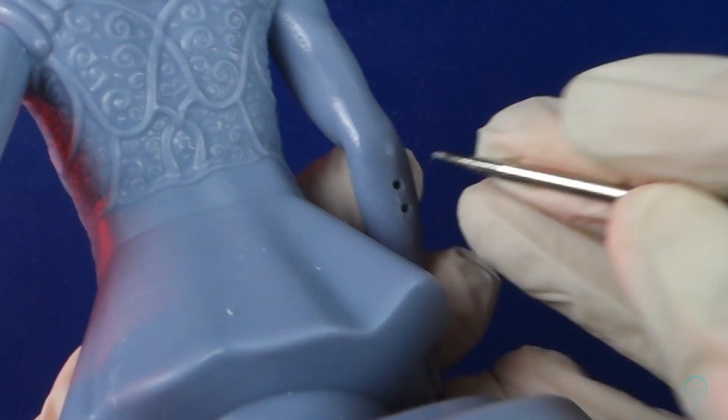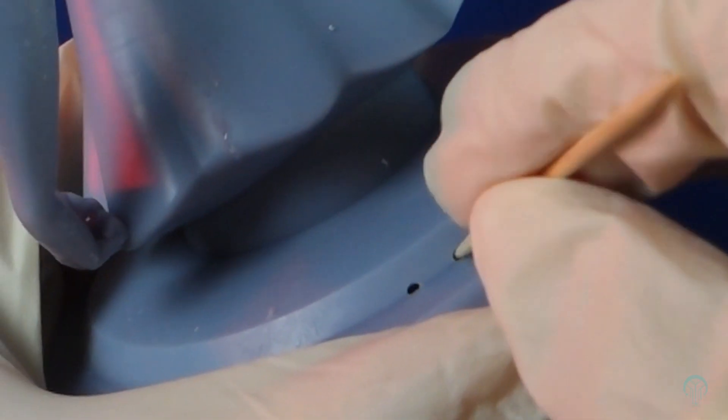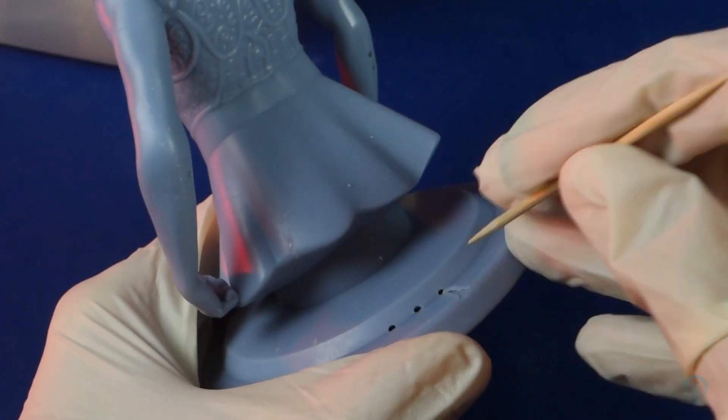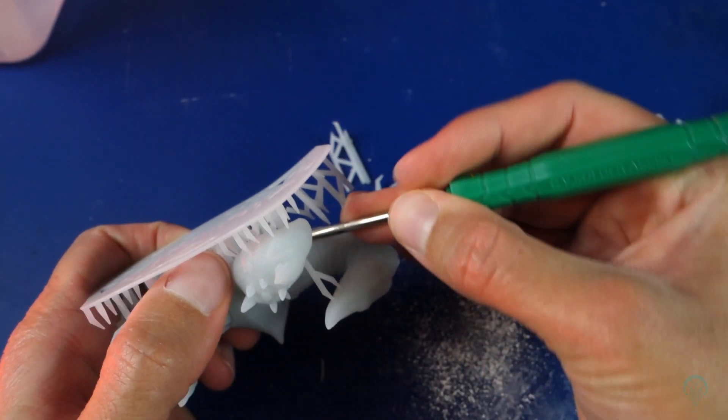I use a small prying tool to unclog the hole, but you can easily use a toothpick as well. When uncured resin stays trapped, it can cause the model to split and crack. Therefore, it's worth investing a small amount of time in ensuring that all trapped resin is removed.